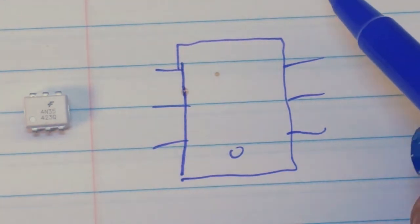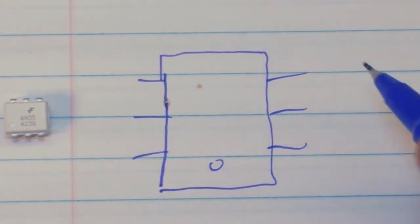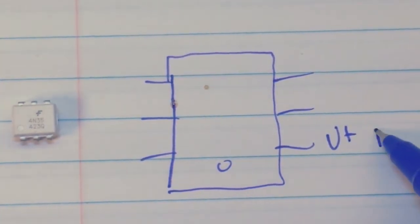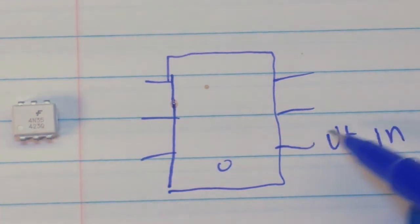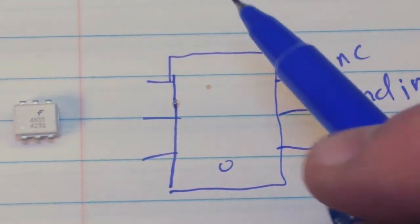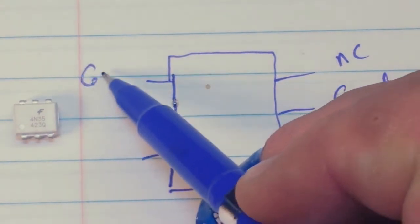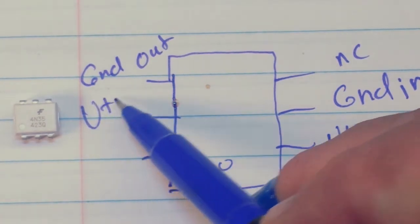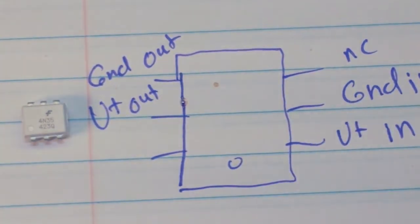Okay, so we have pin 1, which is your voltage in - this is your input side. Pin 2 is your ground on the input side and pin 3 is not connected. Pin 4 is the ground on the output side and pin 5 is the voltage out on the output side.